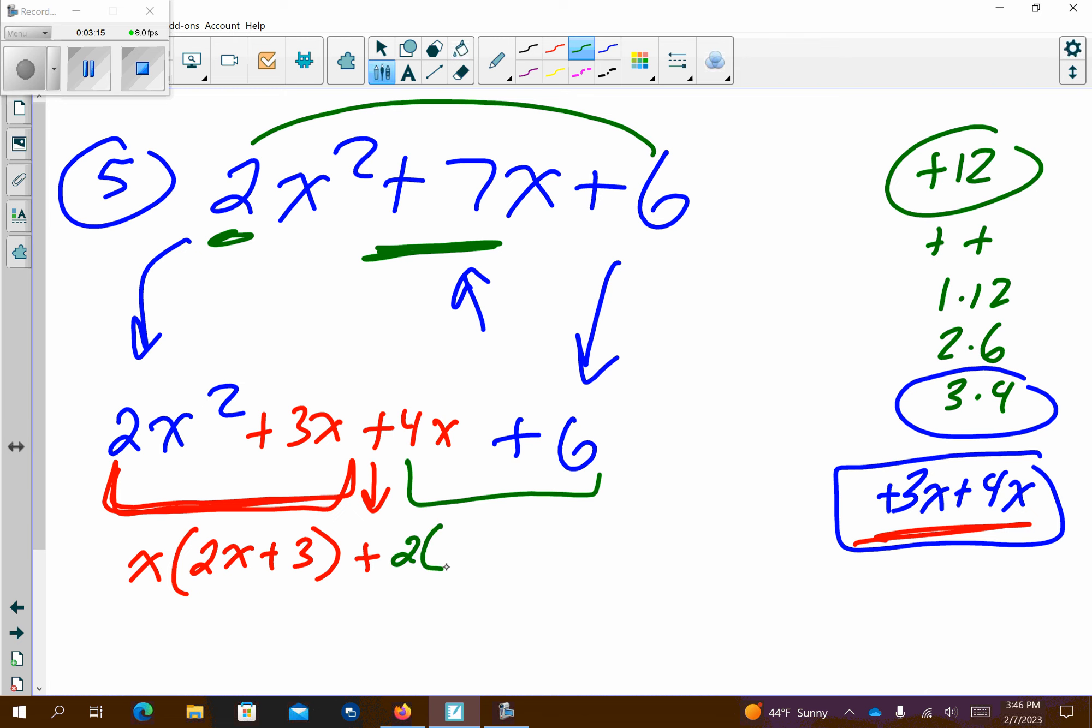So if 2 goes in, comes out of it, 2 times what gives me 4x? Well, 2x. Plus 2 times what gives me 6? 3. These are the exact same. So bring these straight down, and there's my answer.